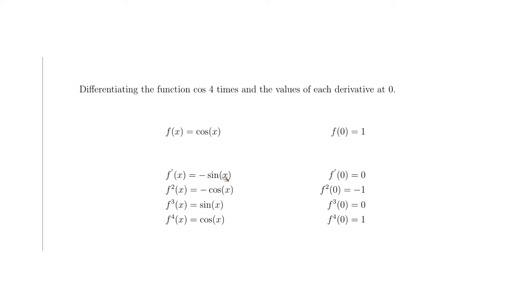For the second derivative, we differentiate minus sine x to get minus cosine x — equivalently, the derivative of sine x is cosine x, then multiply by the constant factor of minus 1. Since cosine of zero is 1, minus cosine of zero equals minus 1, so the second derivative at zero is minus 1.